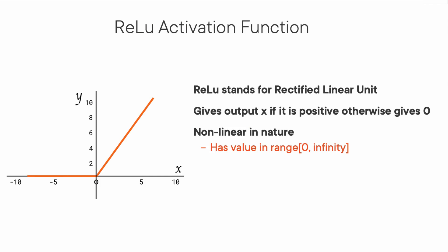But the important thing to understand here is the sparsity of activation. Imagine a big neural network with a lot of neurons. Using sigmoid or tanh will cause almost all neurons to fire in an analog way, that means the activation is dense. This is costly. We would ideally want a few neurons in the network to not activate, thereby making the activations sparse and efficient.